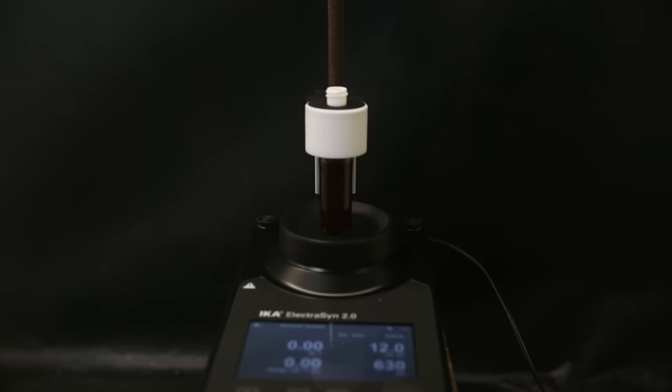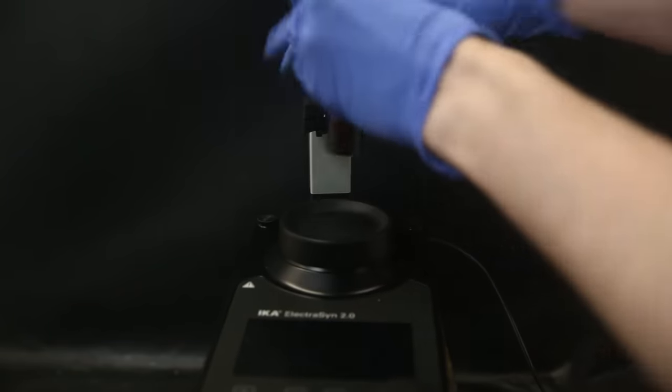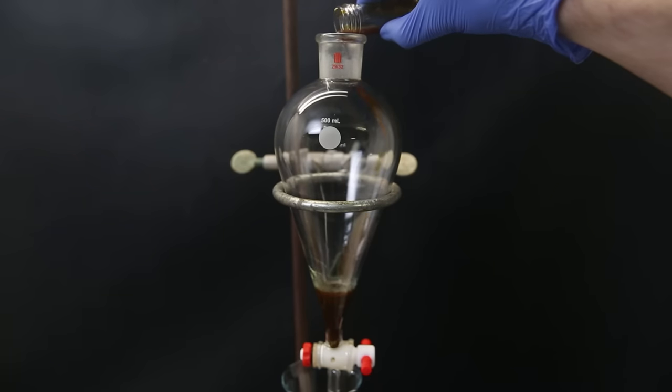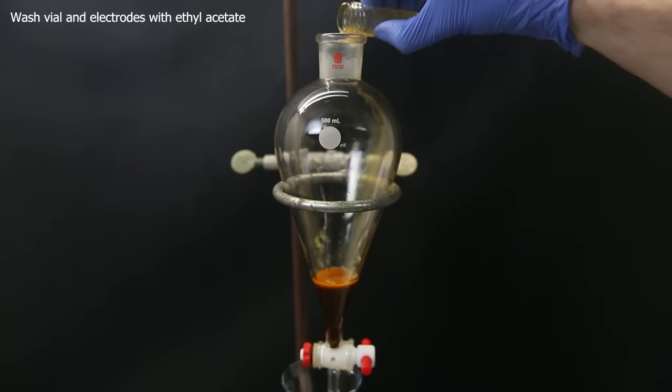When I return, the program is finished and it is now a cloudy brown suspension. So I turn off the device and remove the vial with the electrodes. I move all of the contents to a separatory funnel and wash the vial and electrodes with ethyl acetate and add that to the sep funnel as well.